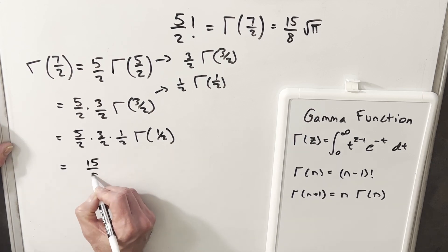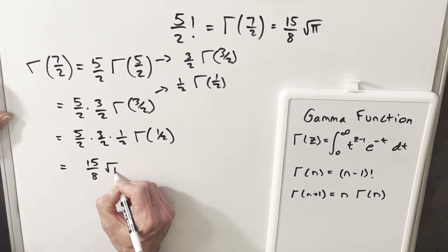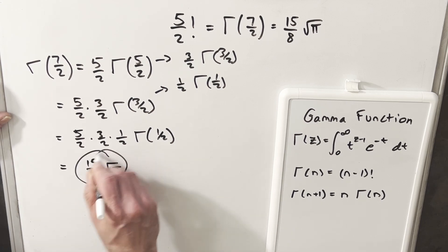But this whole thing is actually 15 over eight. Gamma one half is the value from the other video, square root of pi. So we can actually get to this value pretty quick.